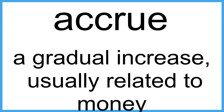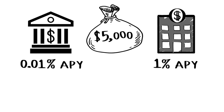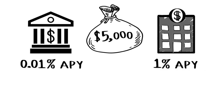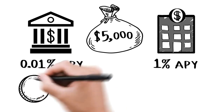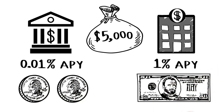Accrue means a gradual increase, usually related to money. Say you had a $5,000 balance in your account — the difference between a hundredth of a percent and one percent is fifty cents in interest versus fifty dollars and twenty-three cents over the course of a year. Money accrues faster with a higher interest rate.